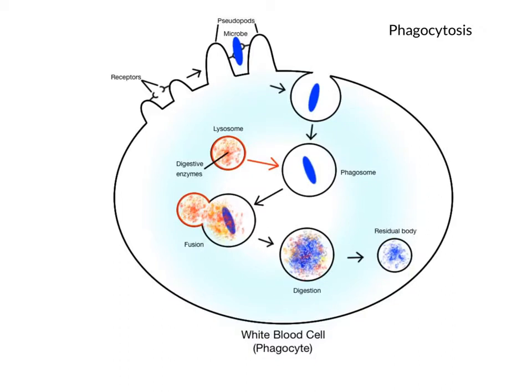So how does this process work? In this diagram, a bacterial cell is being taken into a white blood cell through phagocytosis. Receptors on the white blood cell membrane recognize the bacterium as a foreign cell, which triggers the production of finger-like extensions of the white blood cell's membrane called pseudopods that surround the microbe. As the membrane fuses around the bacterium, a vesicle called a phagosome, or feeding body, is produced and delivers the microbe into the cell.